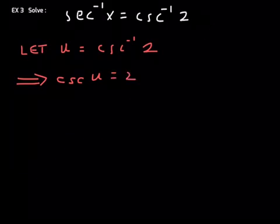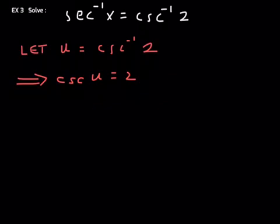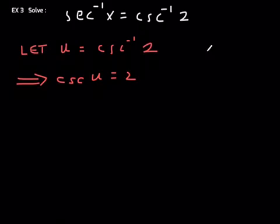Now, do you remember the range for inverse cosecant? The range is the same as, for the most part, the range for the inverse sine, which is negative π over 2 to positive π over 2, excluding 0. And so, basically, quadrant 1 or quadrant 4. Because this value here is positive, we know we're in quadrant number 1.